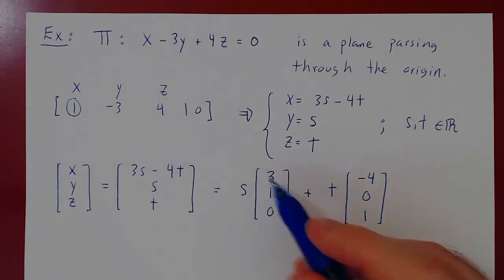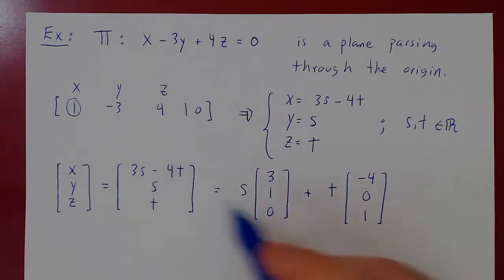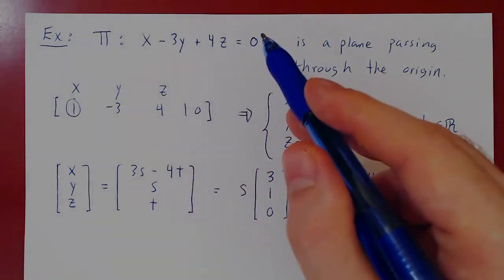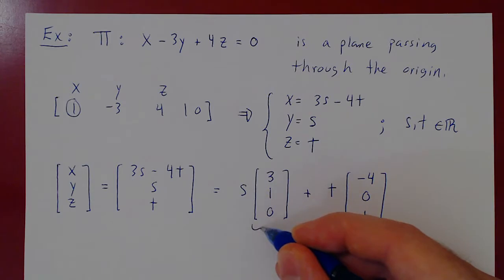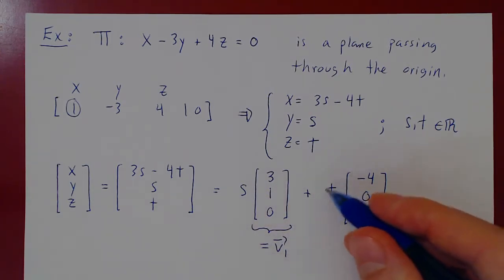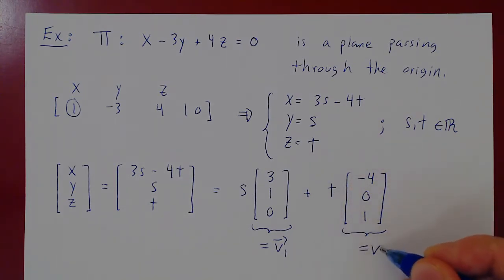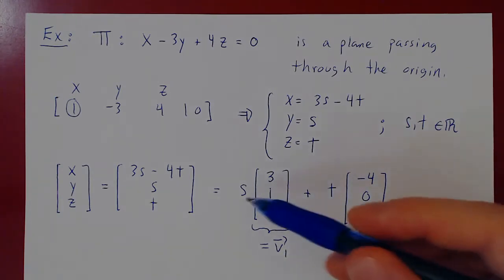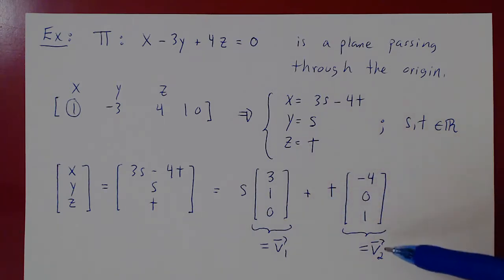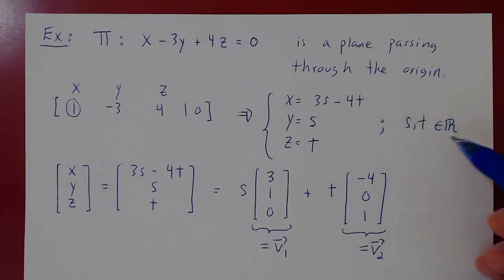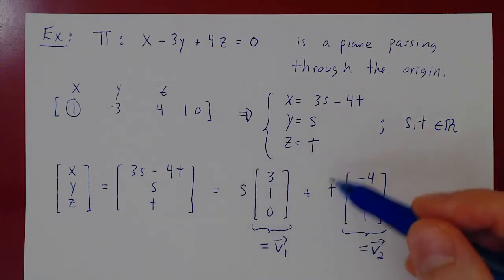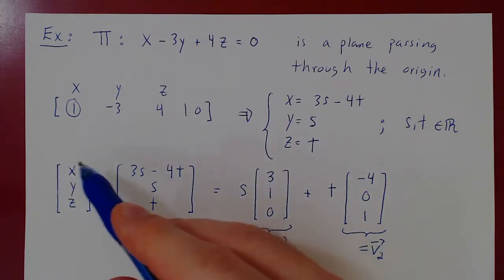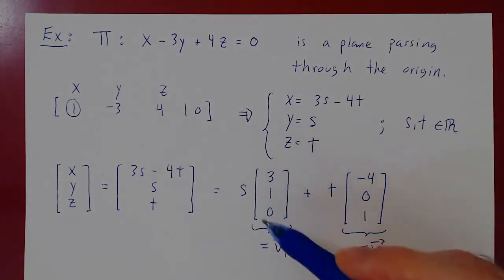Every single point on the plane is some multiple of v1 = (3, 1, 0) plus some multiple of v2 = (-4, 0, 1). This is a linear combination of v1 and v2. As s and t range over all real numbers, this linear combination allows you to get every single point on the plane. So we have expressed any given point on this plane as a linear combination of these two vectors.